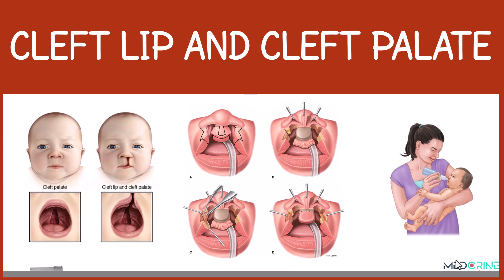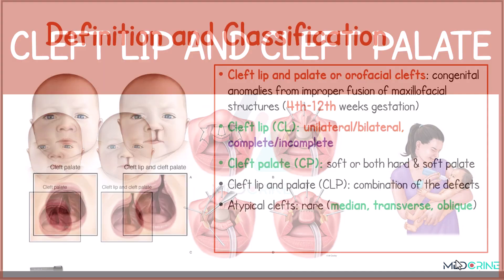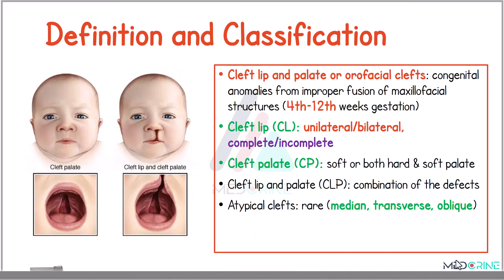Today, we shall be looking at cleft lip and cleft palate. A cleft lip and a cleft palate are known as orofacial clefts. These are congenital anomalies that arise from improper fusion of maxillofacial structures. This fusion usually happens between the fourth week and twelfth weeks of gestation.